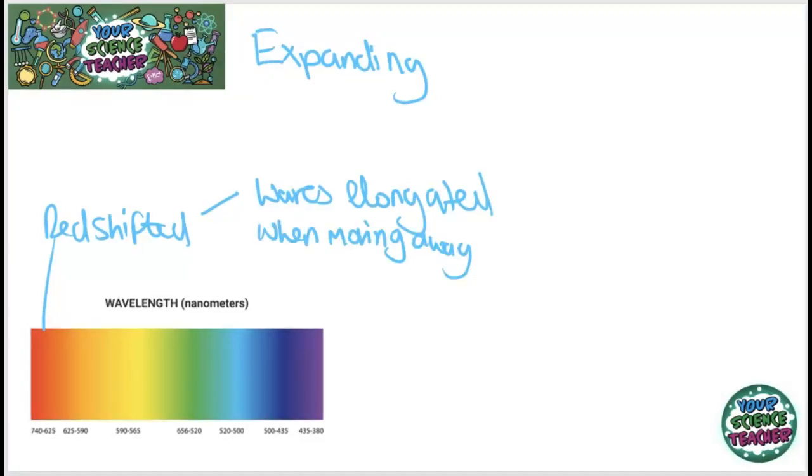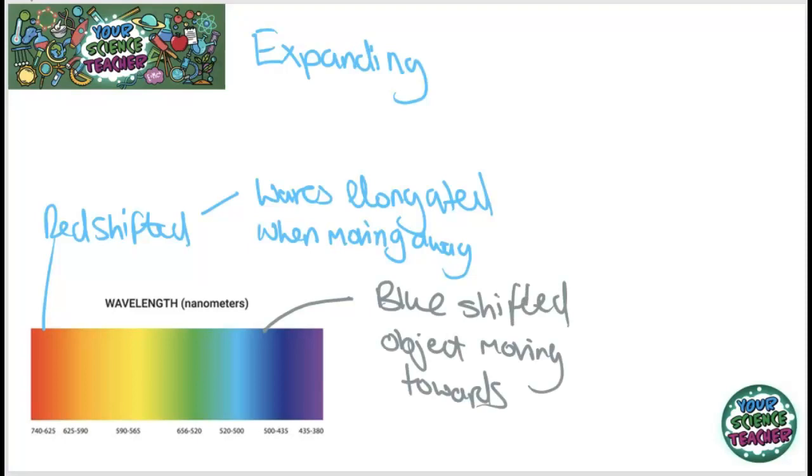You can observe this elongation of waves effect by something called the doppler shift. If you ever have been in a car and you hear a fire engine or an ambulance you'll notice that it sounds different if it's coming towards you or going away from you and this is just doppler shift. This is waves getting elongated as something moves away or getting scrunched together if it's moving towards you. In fact it would be called blue shifted if it was moving towards. And don't get me wrong some galaxies are moving closer together however the majority are red shifted and this has led astronomers and physicists to conclude that our universe is in fact expanding.